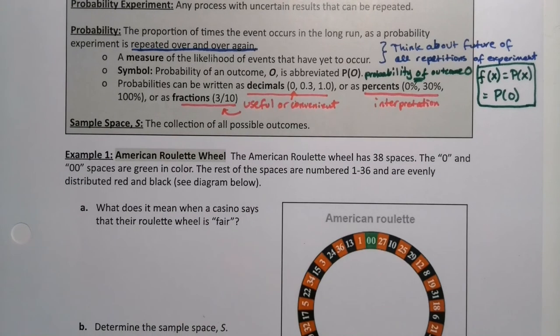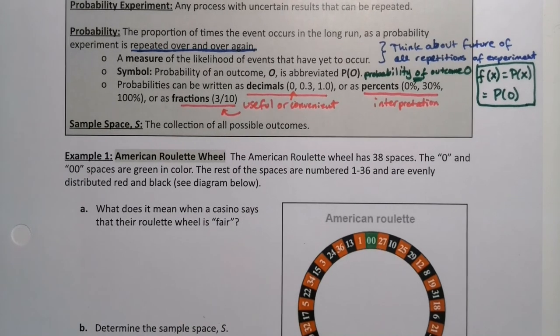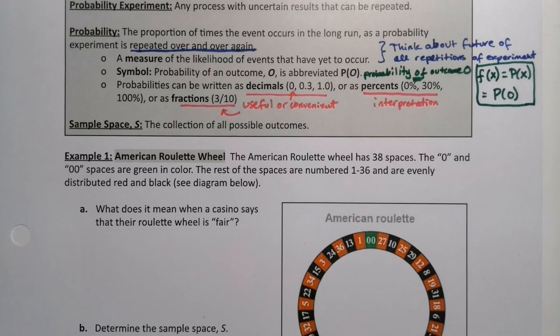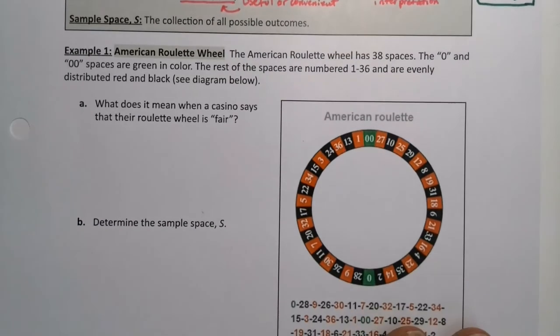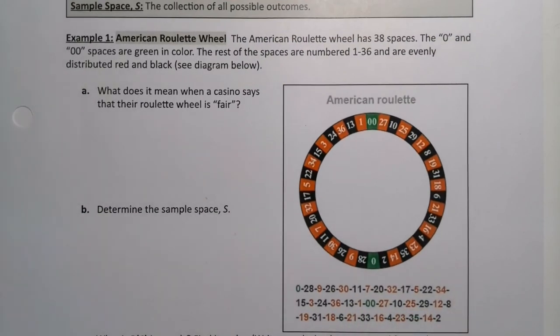A sample space is just the list of all the possible outcomes. You just write them all down. Let's look at the American Roulette Wheel. This is not a wheel that you have to memorize or anything. This is on your exam notes packet. You can see that it has three colors. I apologize if you're color blind and cannot see those, so I wrote them all down for you on your exam notes packet as well.